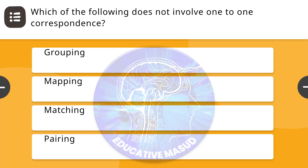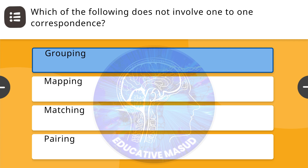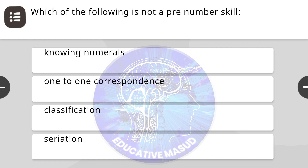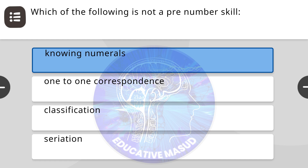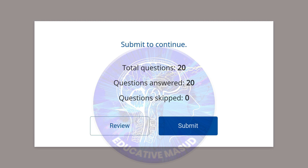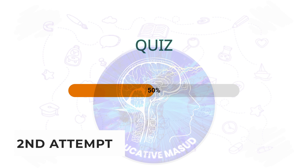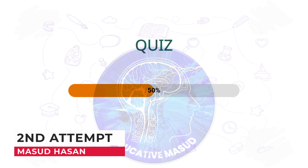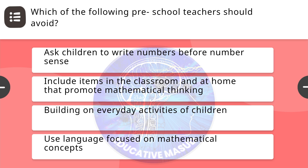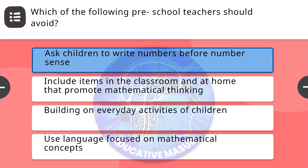Next question: which of the following does not involve one-to-one correspondence? Correct answer is grouping. Next question: which of the following is not a pre-number skill? Correct answer is knowing numerals. Next question: which of the following is not a pre-number skill — what should a teacher avoid? Correct answer is ask children to write numbers before number sense.